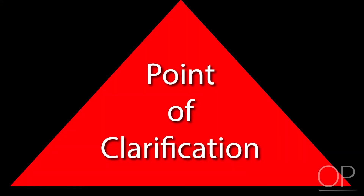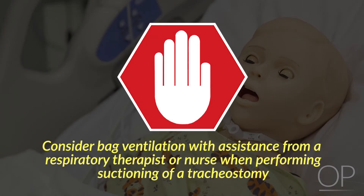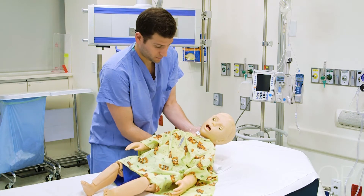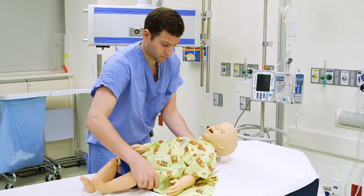Point of clarification: Consider bag ventilation with assistance from a respiratory therapist or nurse when performing suctioning of a tracheostomy. If saline suctioning doesn't help, try repositioning the patient. If a change in positioning preceded the problem, try returning the patient to a neutral resting position. If not, try positioning the patient supine with the neck gently extended, if not otherwise contraindicated.